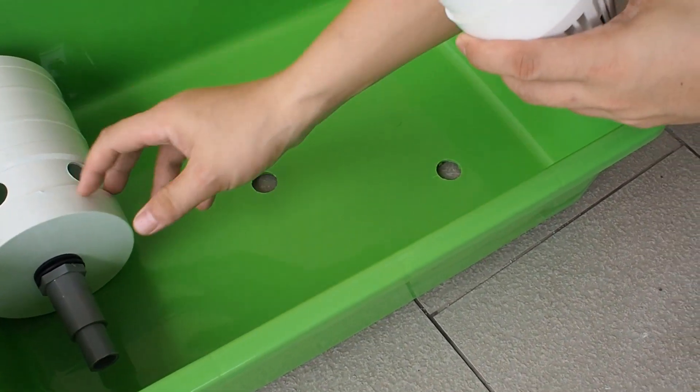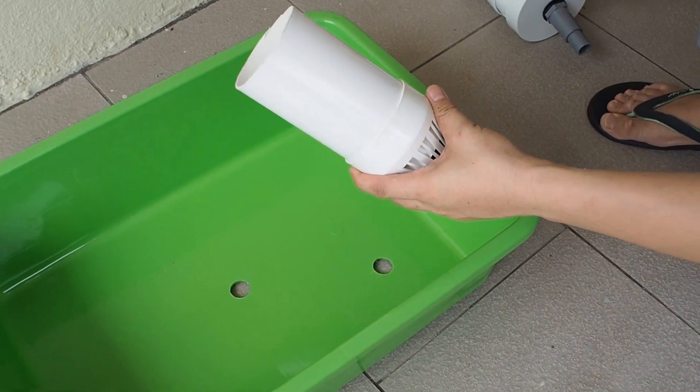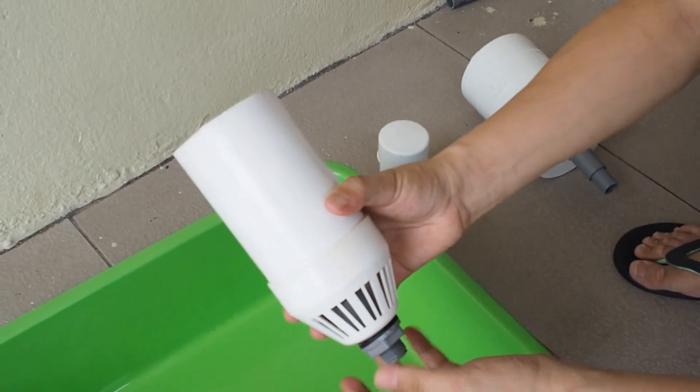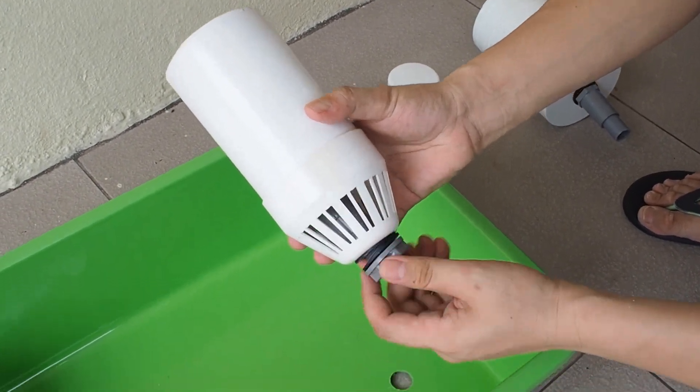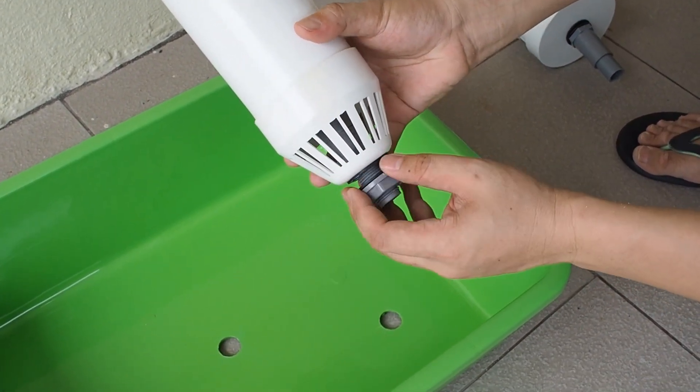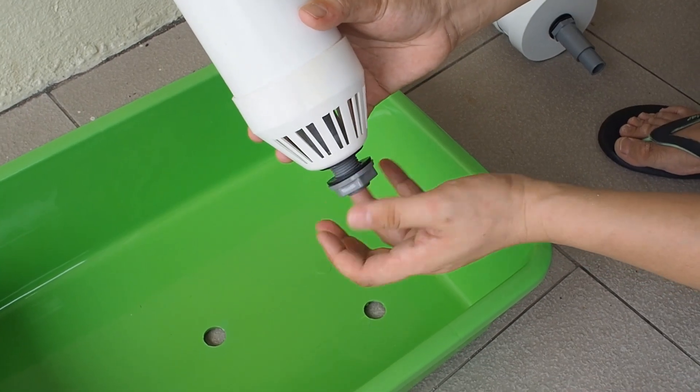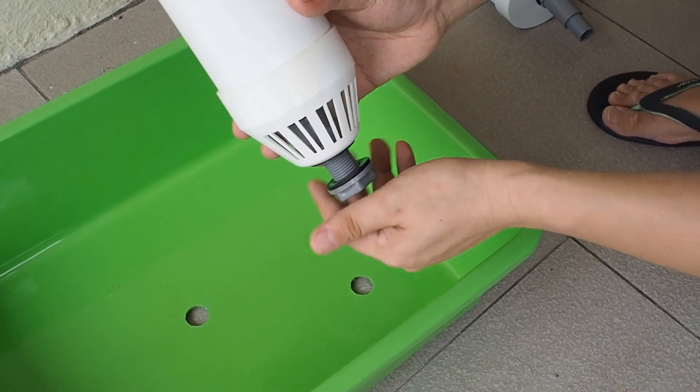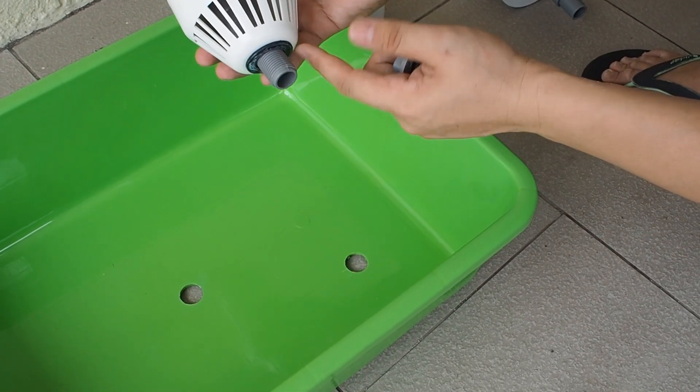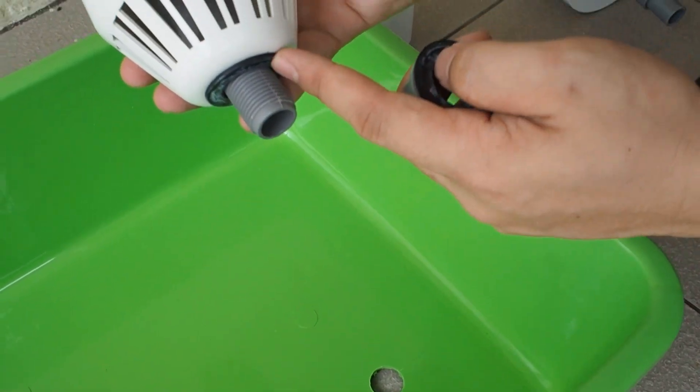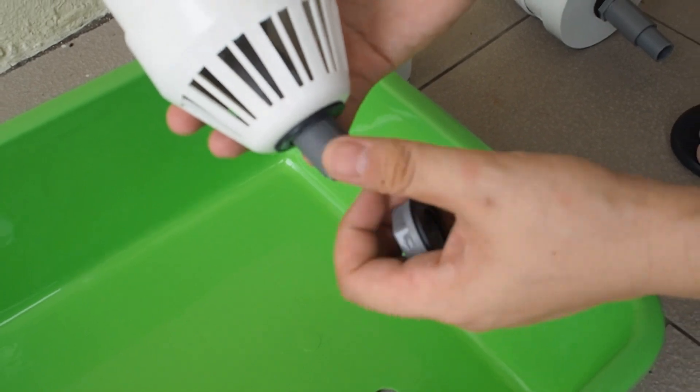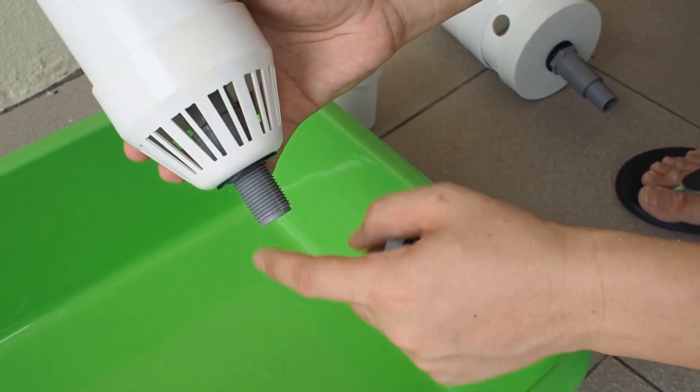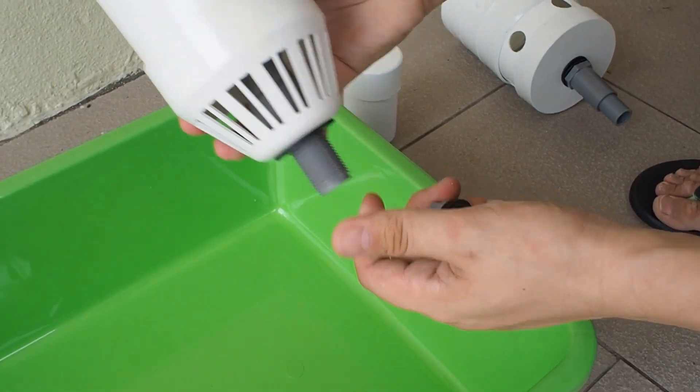We install the bell siphon first and the first step you need to do is open up this nut. You can see the two side gasket. This gasket is very important to make sure that there's no water will leak out from the grow bed to the fish tank.